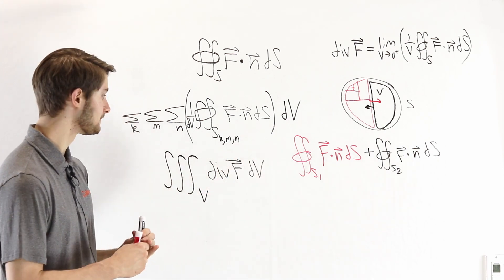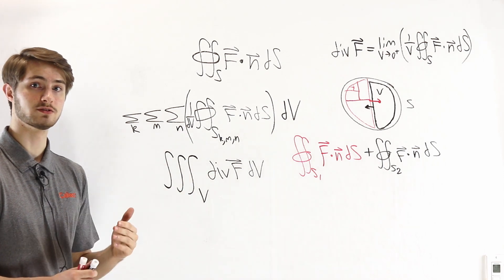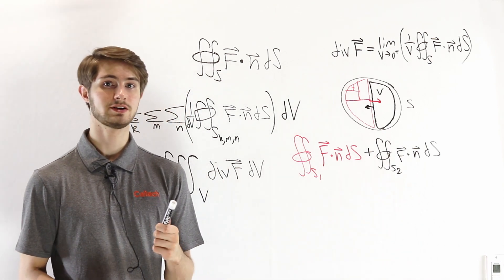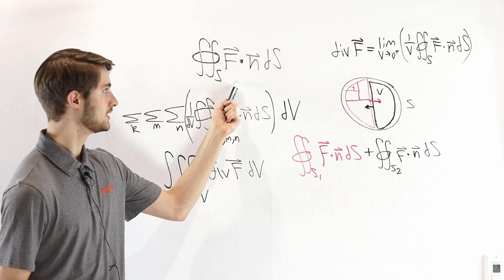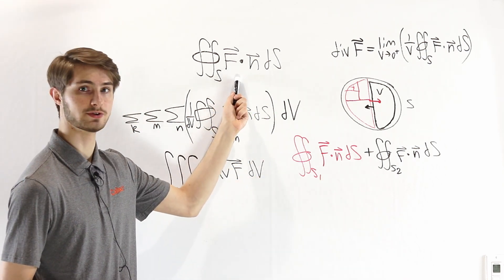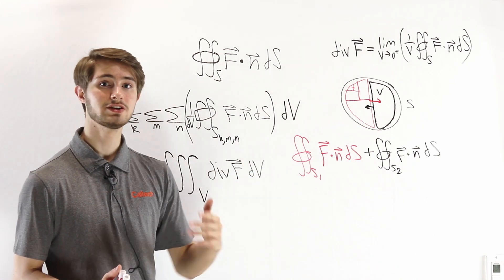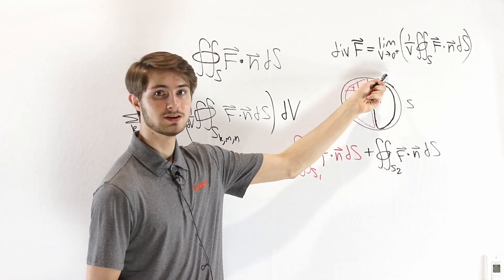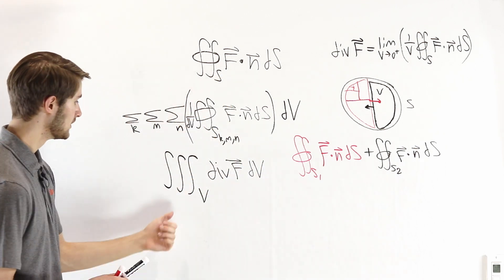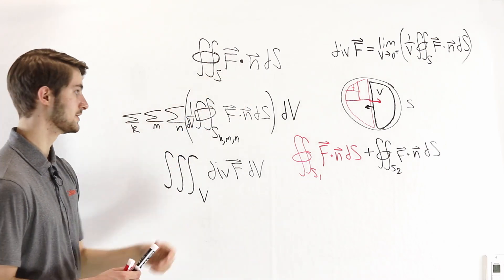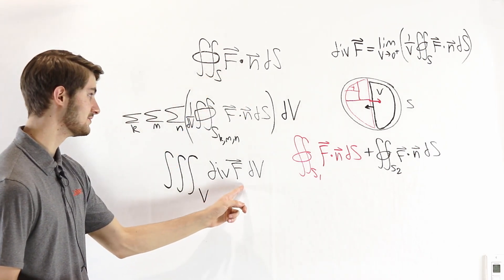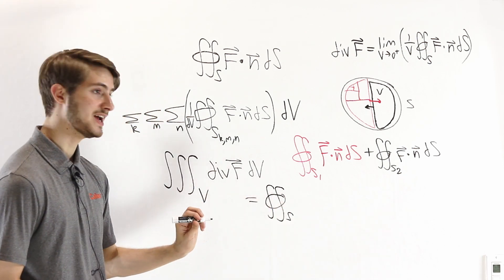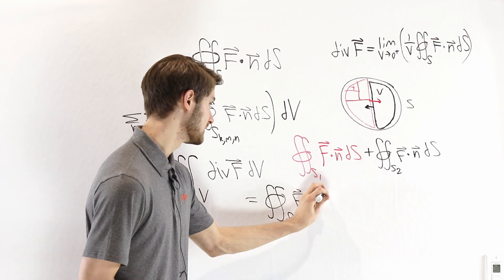Remember that every single step in this process preserved the original value of the surface integral. When we split it into two regions it was still equal to the surface integral; splitting into four, eight, or sixteen regions still gives the same value. Even taking the limit with an infinite number of regions, it still equals the original surface integral. So we conclude: the integral over some volume of the divergence of F with respect to that volume equals the integral over the boundary surface S of F dot n dS.